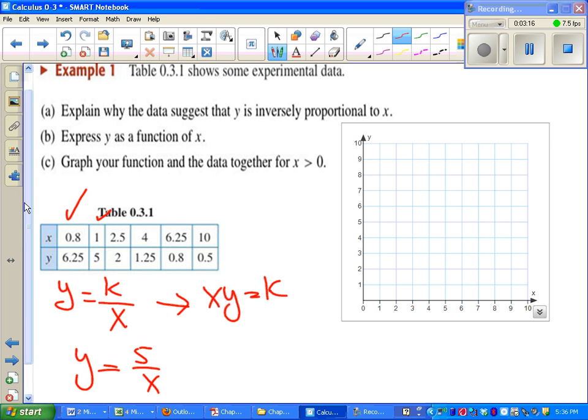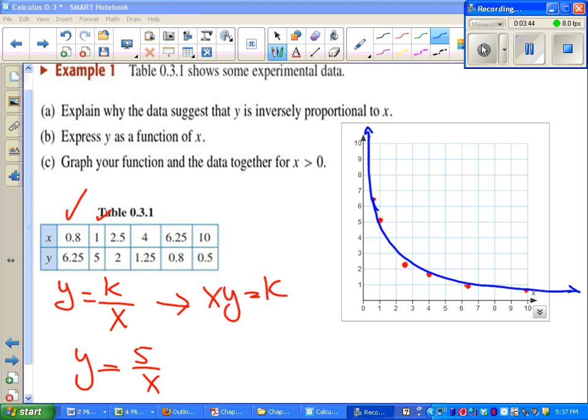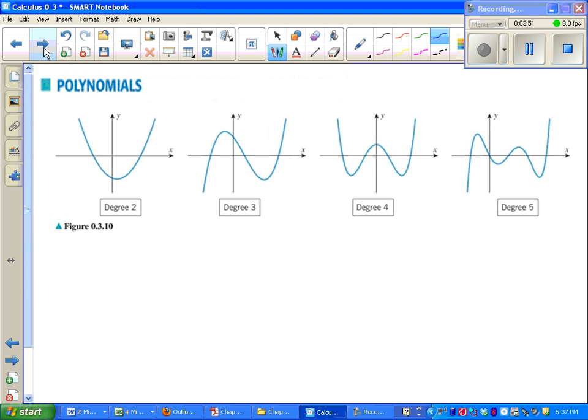That takes care of part b for us. It says express y as a function of x. Part c says graph your function and the data together for x is bigger than 0. So we've got six points that we can plot, plus we can check to see if that's right using our skills from pre-calculus or a graphing calculator. Either way, go ahead and try this on your own, pause the video, see if you get the same thing I do. And that's it, all the points should fit smoothly.